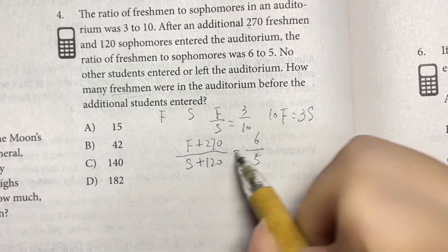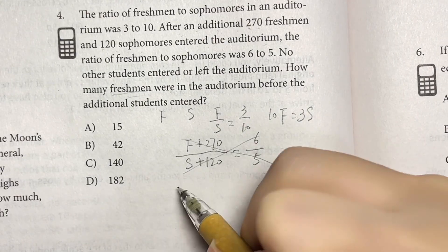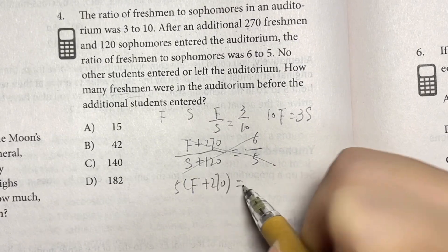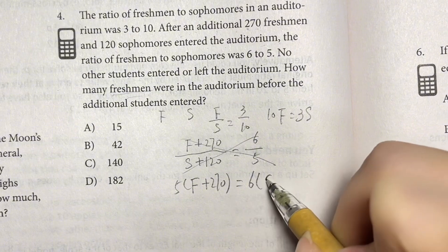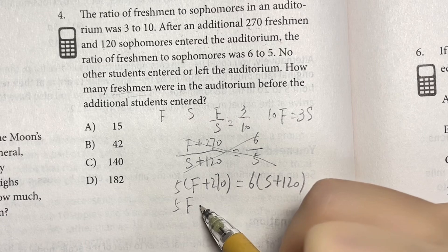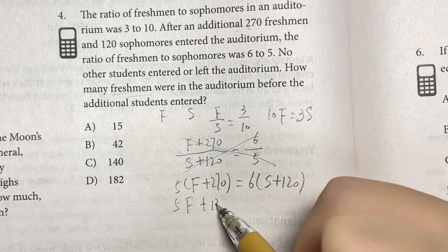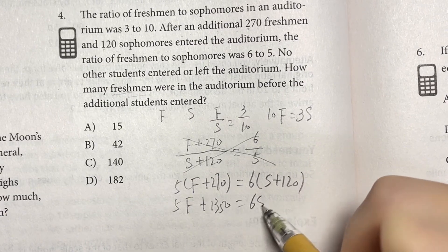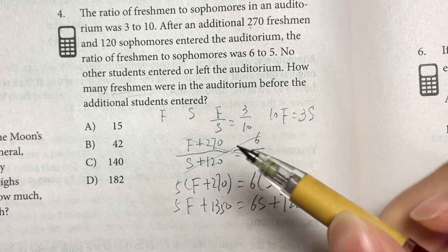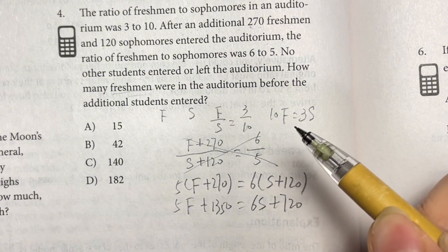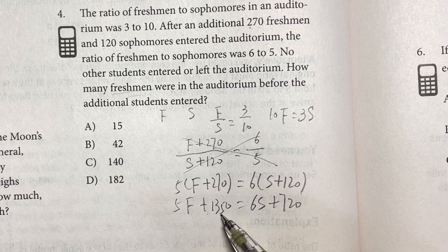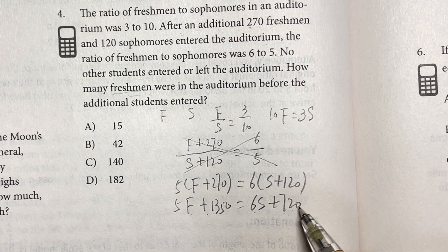Then we solve for this, use cross multiply. This is 5F plus 1350 equals 6S plus 720. So now we have 5F plus 1350 equals 6S plus 720.